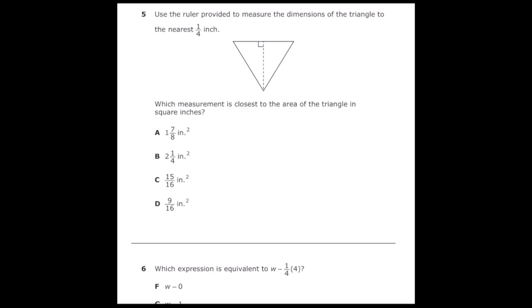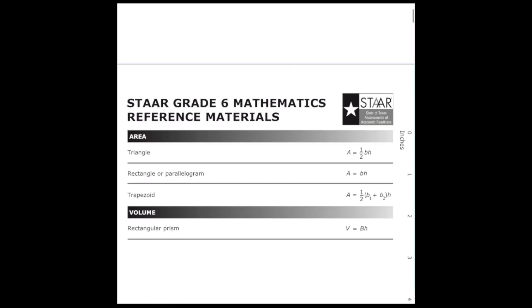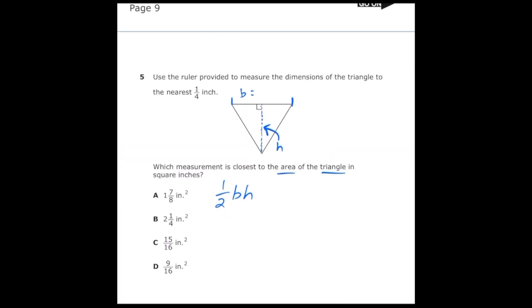Number five from the 2022 sixth grade math STAR test says use the ruler provided to measure the dimensions of the triangle to the nearest quarter inch. Which measurement is closest to the area of the triangle in square inches? If I check my reference sheet, I know that the area of a triangle is equal to 1/2 times base times height. Once I use my ruler to measure the sides, I'm going to see that my base is equal to 1 and 1/4 inch, and my height is equal to 1 and 1/2 inches.